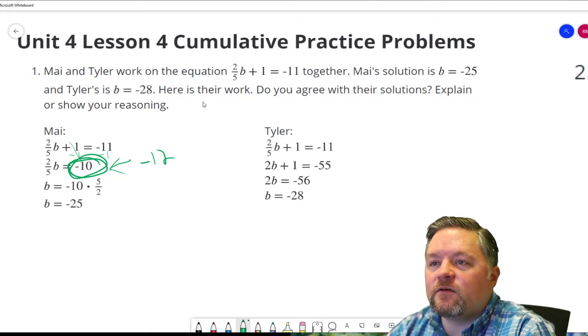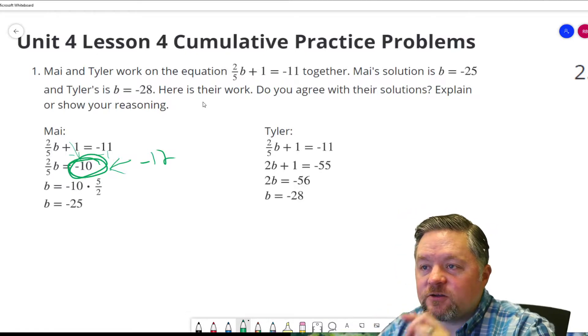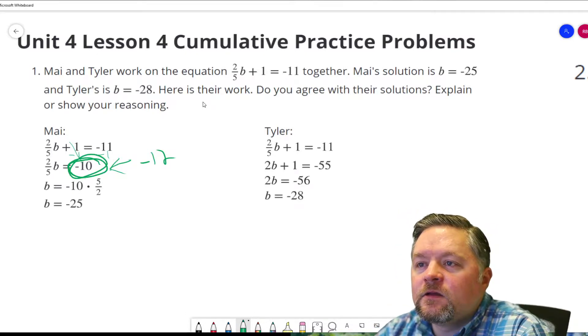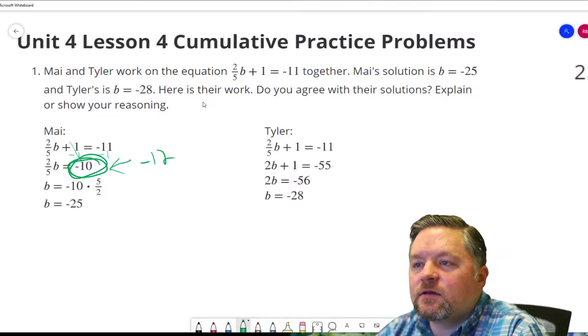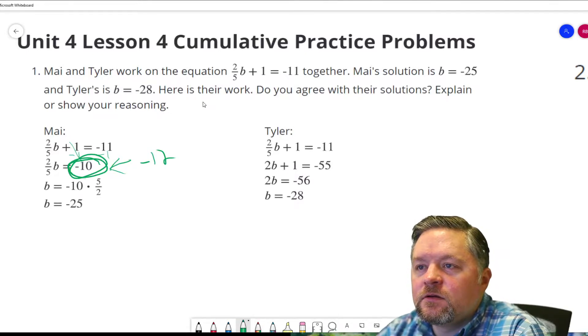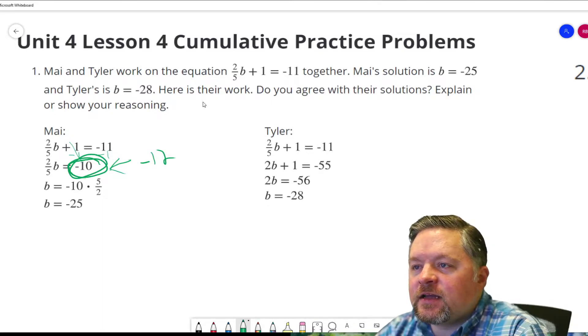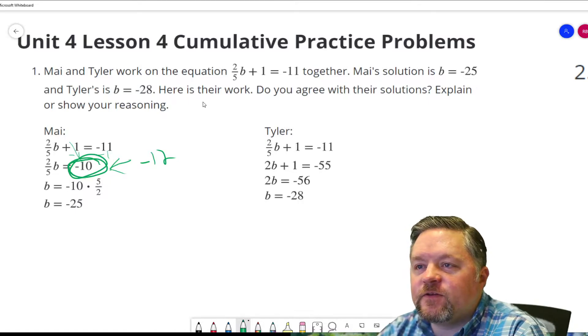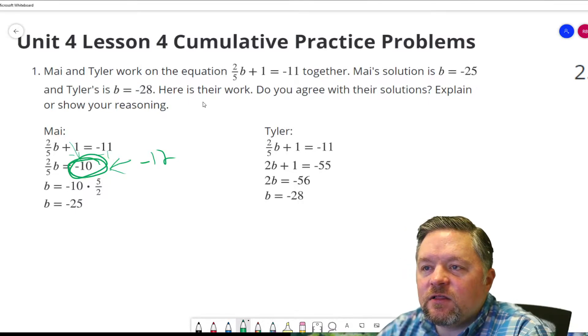That should be negative 12. Okay, what did Tyler do? Tyler, it looks like the 2 fifths became 2. The negative 11 became negative 55. So it looks like he multiplied by 5.